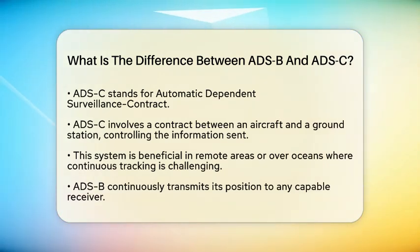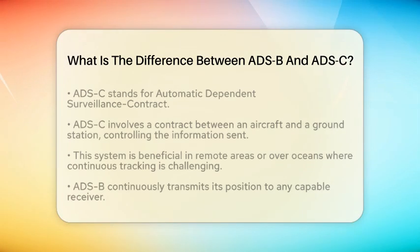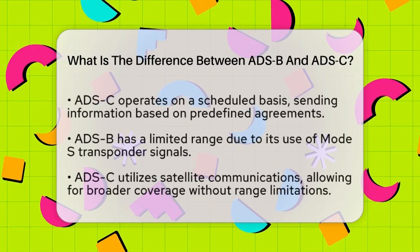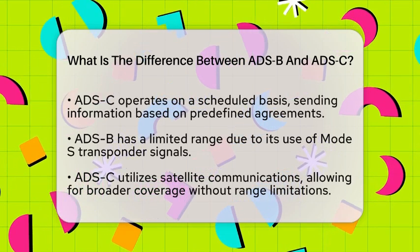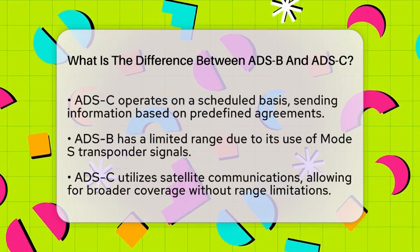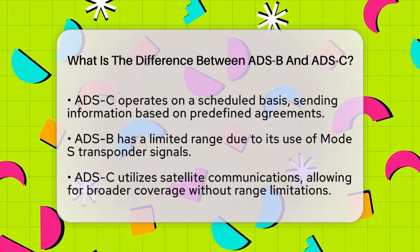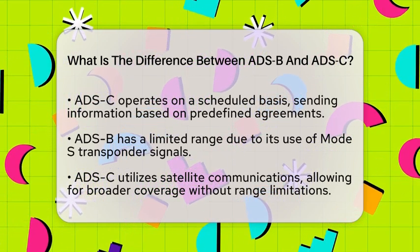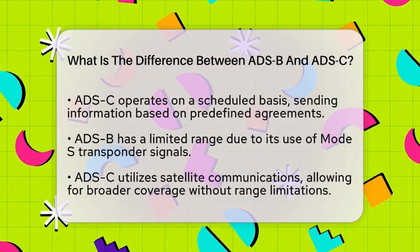When it comes to range and infrastructure, ADS-B signals are transmitted using a Mode-S transponder, which has a limited range. Conversely, ADS-C utilizes satellite communications, allowing it to function over much larger distances without the same limitations.